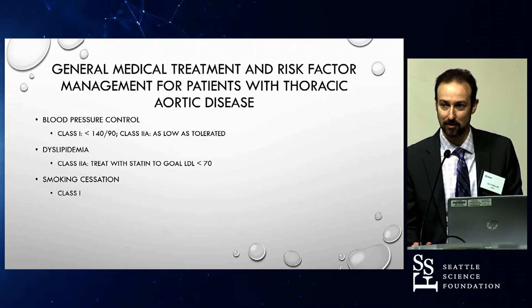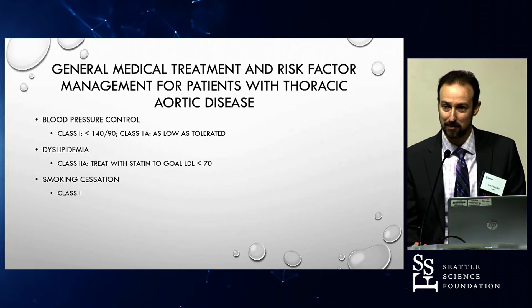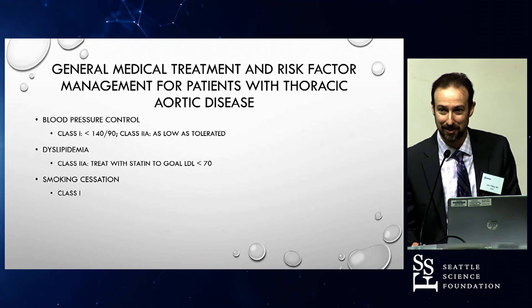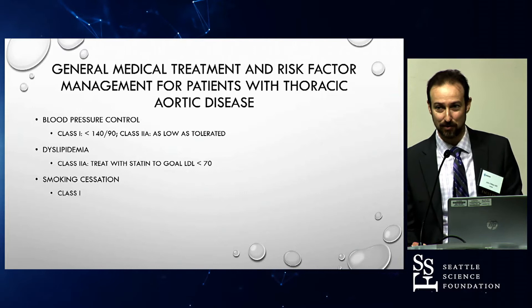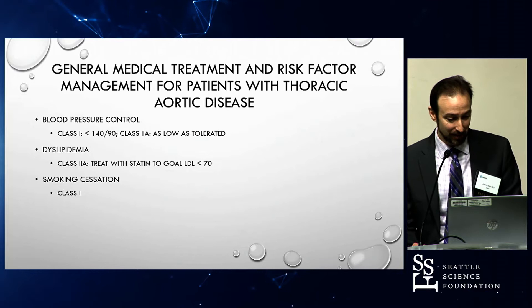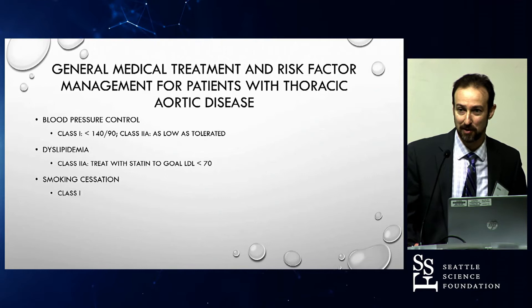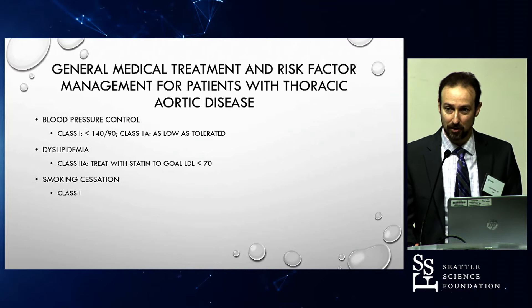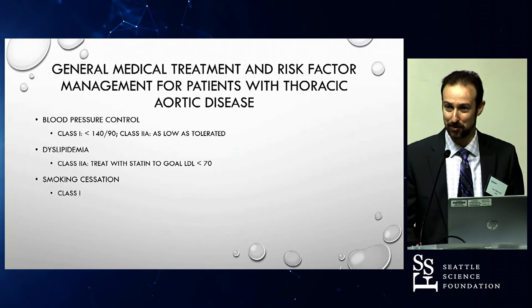In terms of class recommendations: class one means it's definitely beneficial and you should do it; class two means the benefit is greater than the risk and it's recommended; class three means harm is likely. You'll also see level of evidence — A means there have been randomized controlled trials, B means one controlled trial or observational studies, and C — which covers a lot of the evidence for what we're doing — is based on expert opinion.